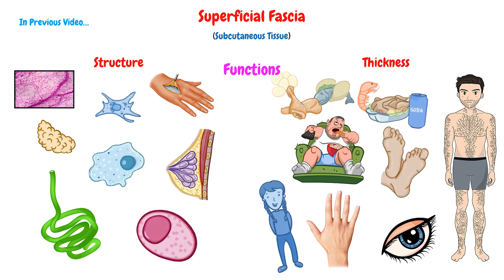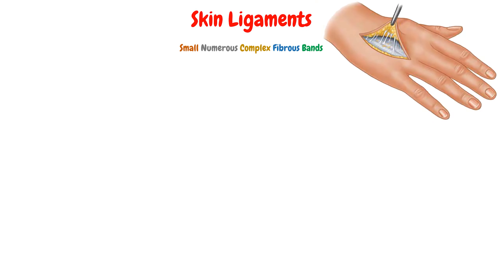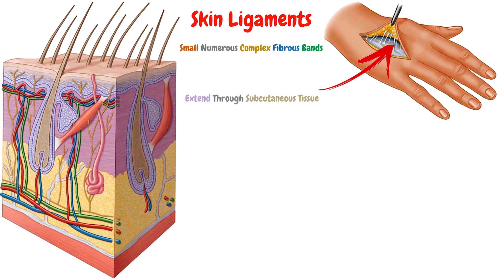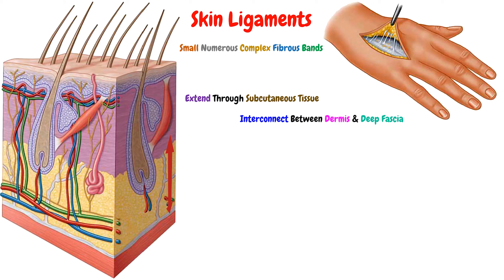In this video, we will talk about an important structure in this layer, which is the skin ligament. The skin ligaments are small, numerous, complex fibrous bands. These bands extend through the subcutaneous tissue and interconnect between the dermis and the deep fascia, which is under the superficial fascia.